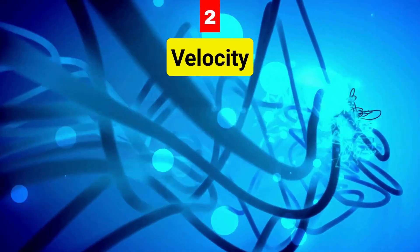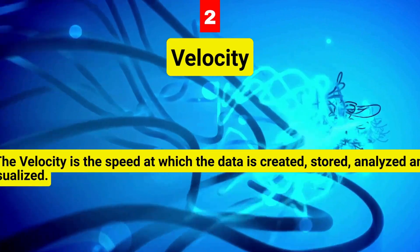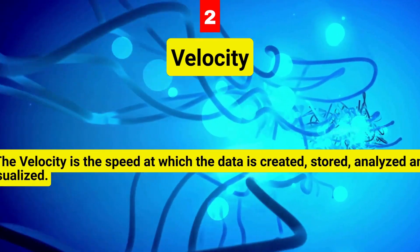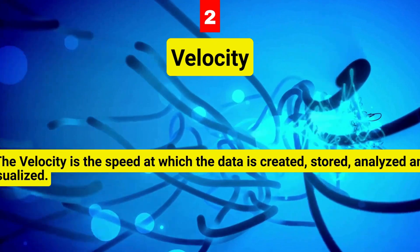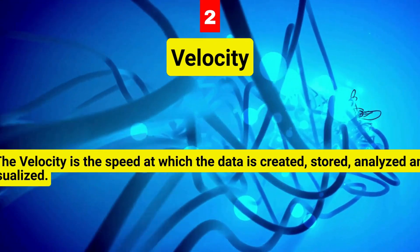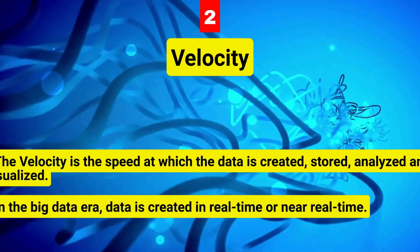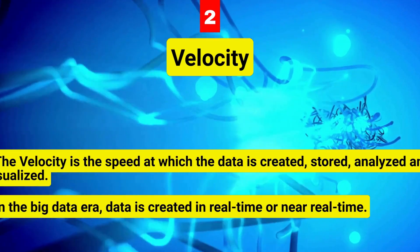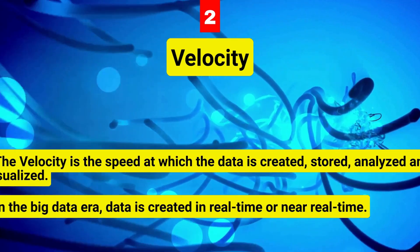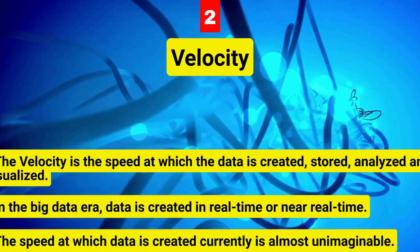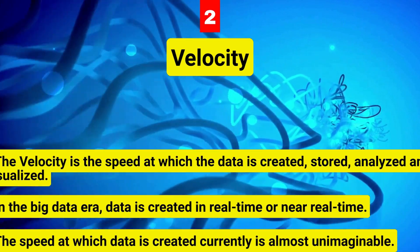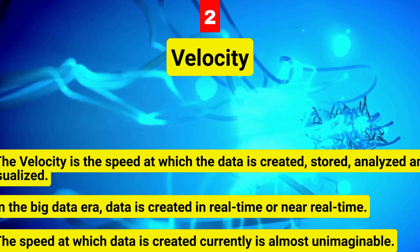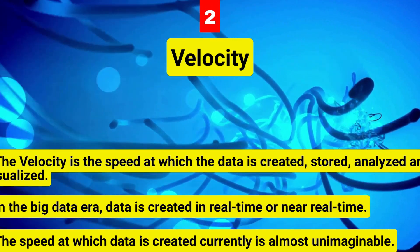Number two is velocity — the speed at which data is created, stored, analyzed, and visualized. In the past, when batch processing was common practice, it was normal to receive an update from the database every night or even every week. Computers and servers required substantial time to process data and update databases. In the big data era, data is created in real-time or near real-time. With the availability of internet-connected devices, machines can pass on their data the moment it is created. The speed at which data is currently created is almost unimaginable.